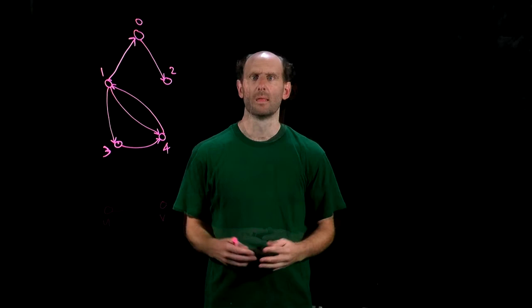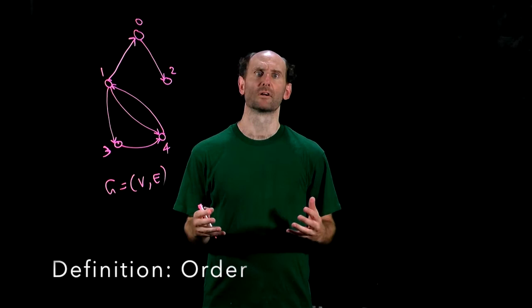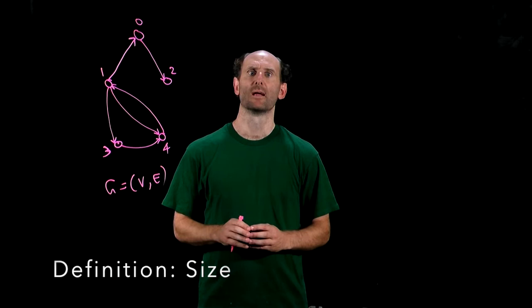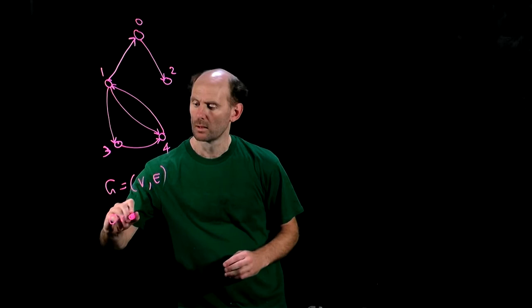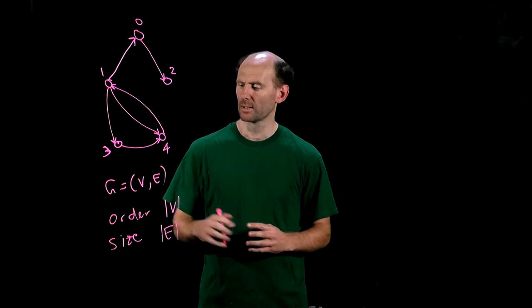There are a couple of notions of magnitude of a digraph G = (V, E). The order of a graph is the magnitude of the vertex set, while the size of the graph is the magnitude of the arc set. So order is just |V| and size is |E|. Typically we'll use N for the order and M for the size.